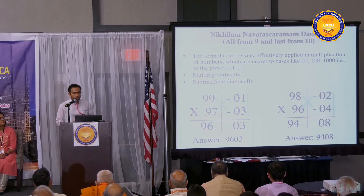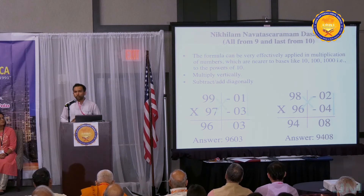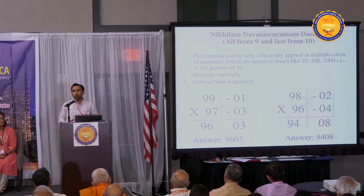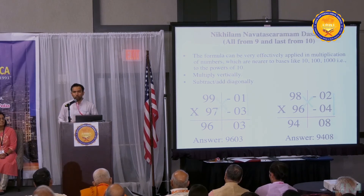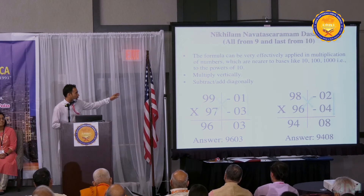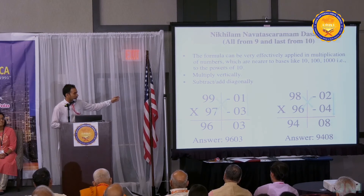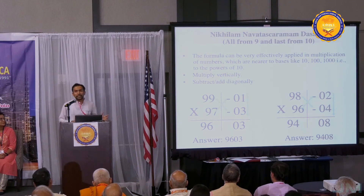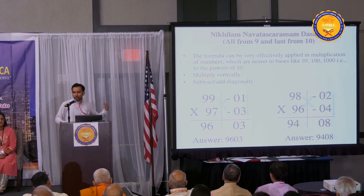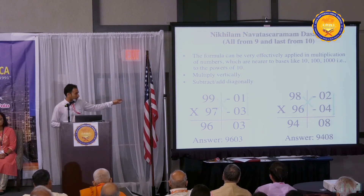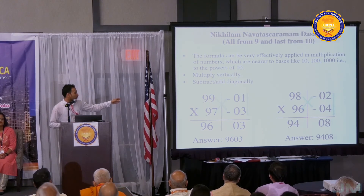So what we are going to do — I am going to ask you one question: 99 is how much less than 100? One, right? So we are going to put one on the right side of the red line. So 99 is one less, so we put one there. 97 is how much less than 100? Three, right? So we are going to put three underneath, near to 97 on the right side.